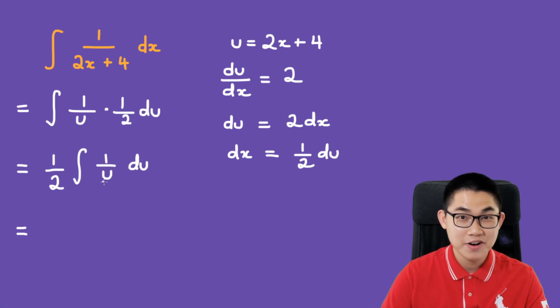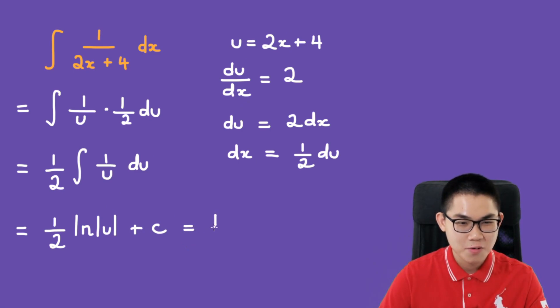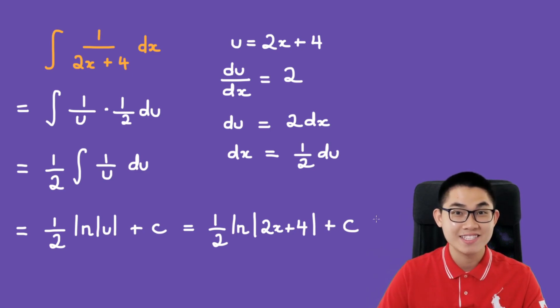The antiderivative of 1 over u is ln of absolute value of u plus c. The last step is to substitute u back into our expression, giving us 1 over 2 times ln of the absolute value of 2x plus 4 plus c. That is your answer.